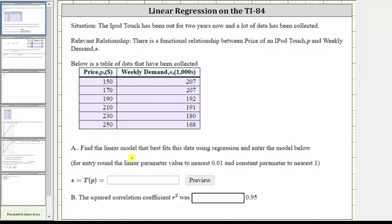Part A, we're asked to find the linear model that best fits this data using regression and enter the model below. We're told to round the linear parameter value to the nearest hundredth or two decimal places. This would be the slope and the constant parameter to the nearest one, which would be the vertical intercept.